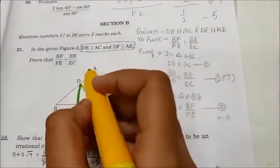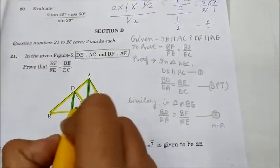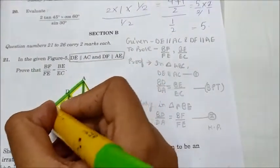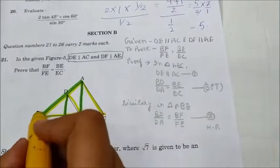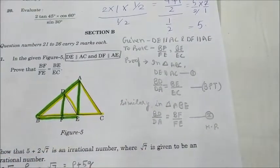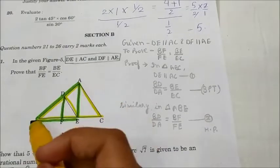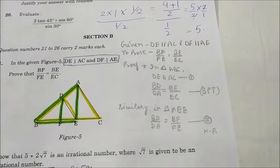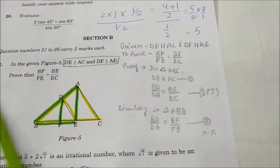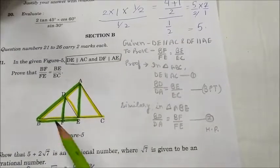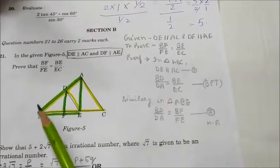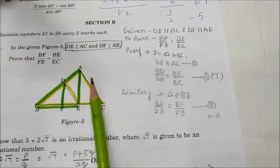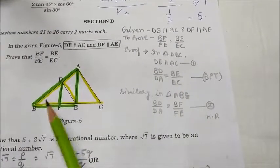For the proof, we consider the bigger triangle ABC and the smaller triangle ABE — AB is common to both. In triangle ABC, DE is parallel to AC, therefore by the BPT theorem, BD upon DA will be equal to BE upon EC. We label this as Equation 1.